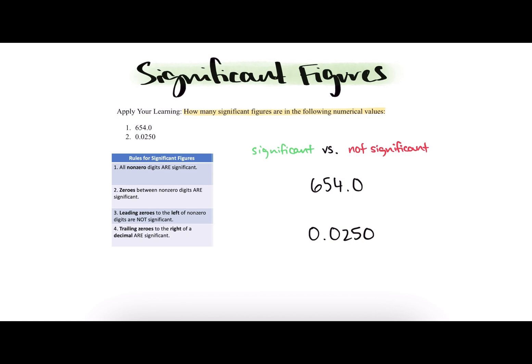Our first number is a six. Based on rule number one, which says all non-zero digits are significant, so six is a significant figure. That rule also applies to five and four then, since neither five and four are equal to zero.